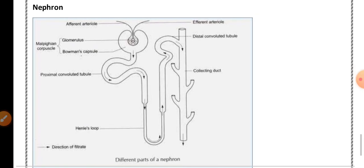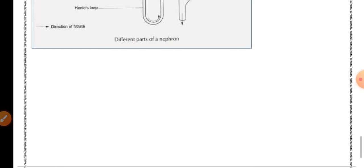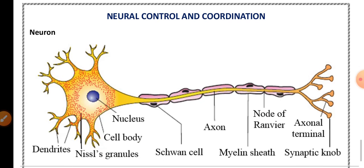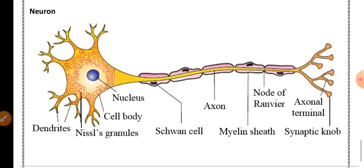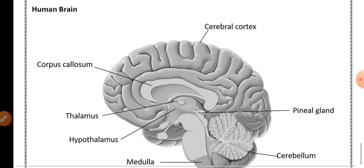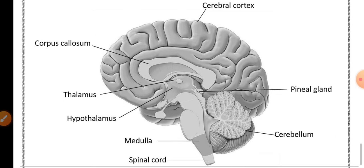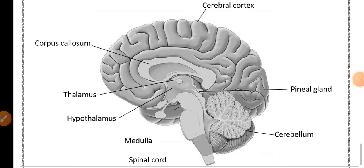From Neural Control and Coordination, the neuron diagram is very important for five marks, or they may ask you to draw the human brain diagram. These are all the very important diagrams, flowcharts, and pathways from first PUC biology — from these alone you can score a maximum of 25 to 30 marks in the annual exam. I hope this video is very helpful for you, thank you.